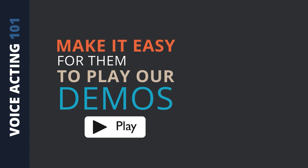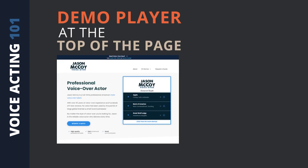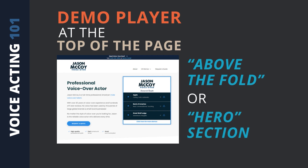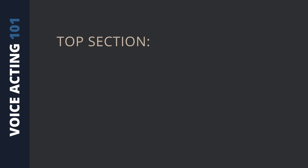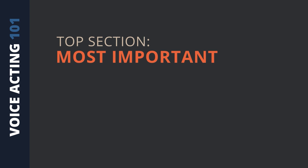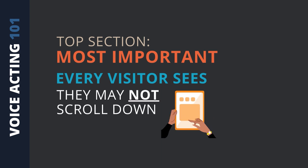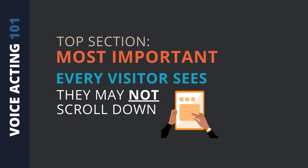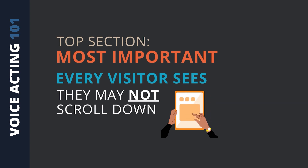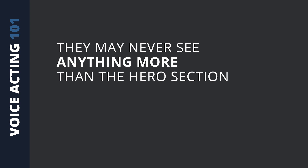We want to make it easy for them to play the demos by putting the demo player at the top of the page. That top of the page section is called the above-the-fold section — it's also called the hero section. The top section is probably the most important section because it's what every visitor is going to immediately see when they come to your website. They may not scroll down. So even if you have an amazing page below the fold, if they don't scroll down, they're never going to see that. If they land on your website and they don't see what they want right away, they may never see anything more than that hero section at the top.